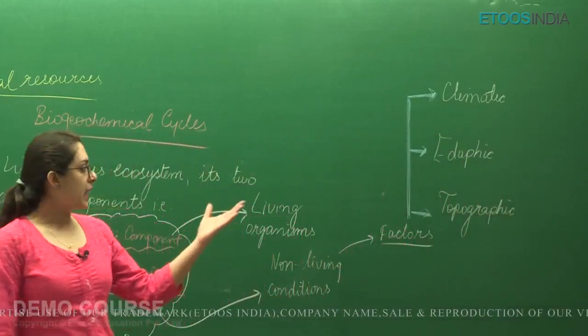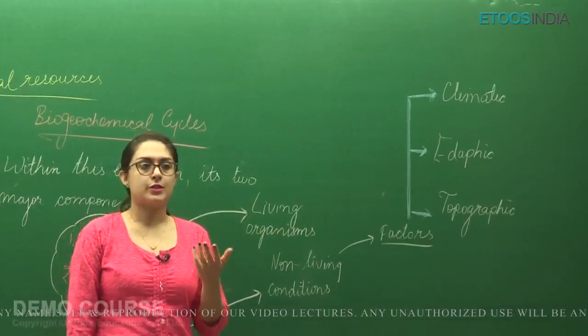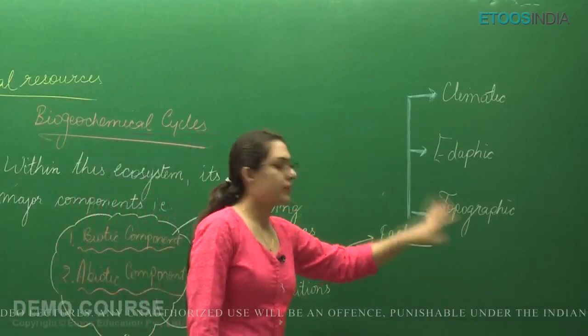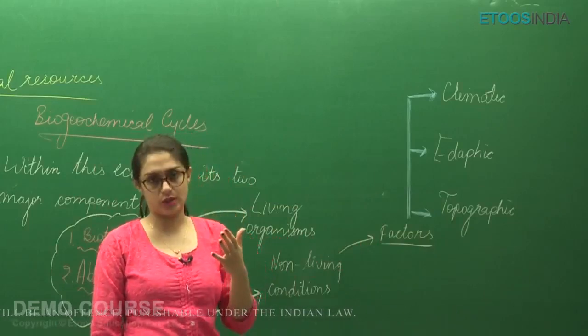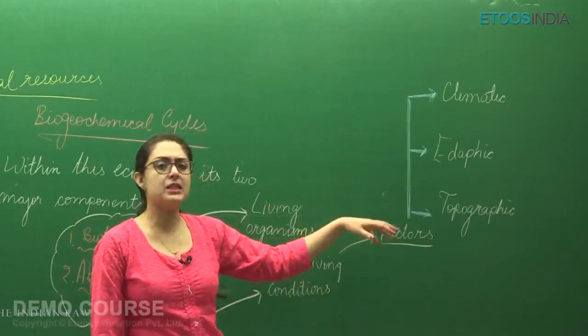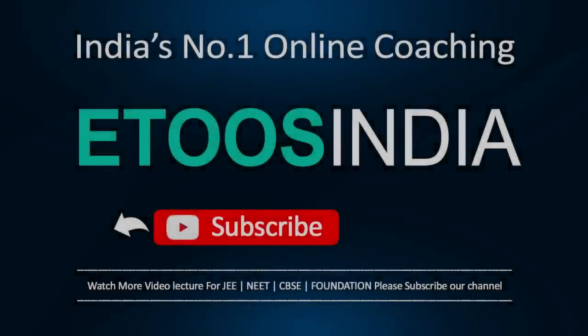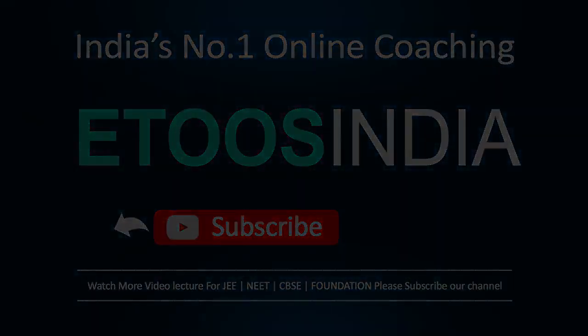In climatic factors we take wind, water, temperature. In edaphic factors we take the soil factors, soil factors like soil characteristics, soil property. And topographic factors actually deal with the physical structures like slopes, mountains, valley. We are not going to see these things in deep, but it is better to understand it, it is better to remember.